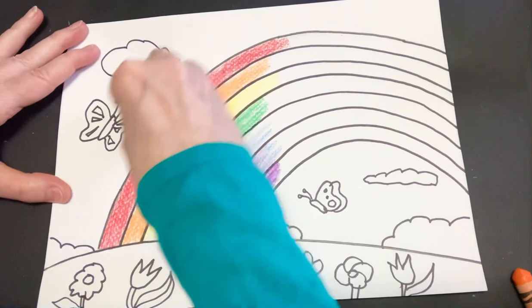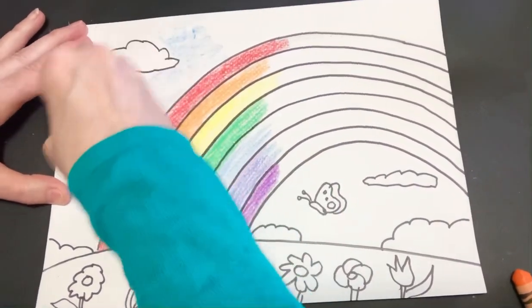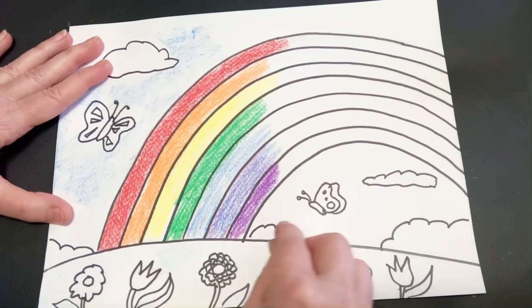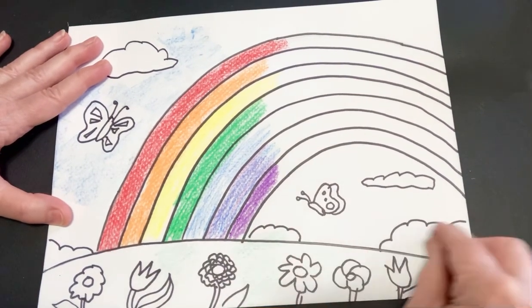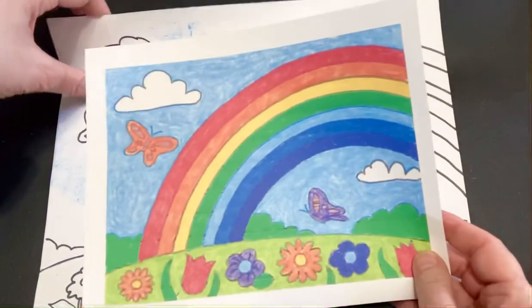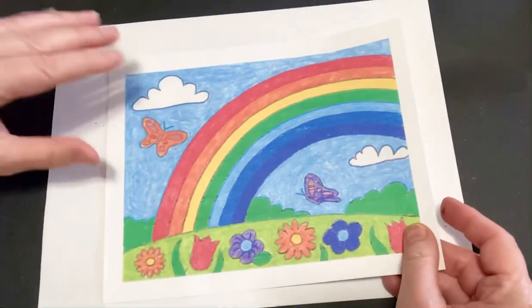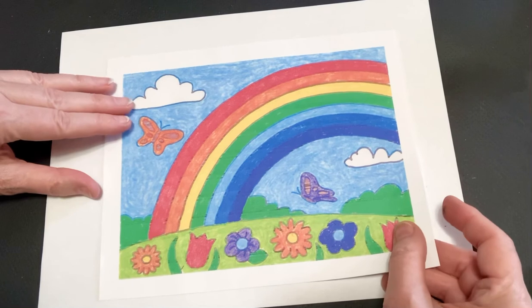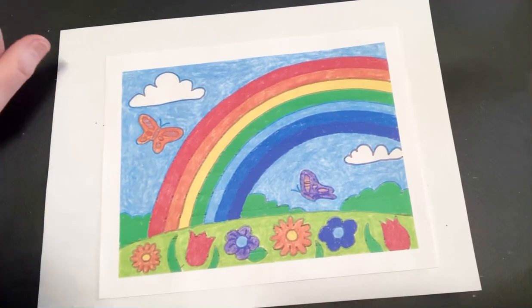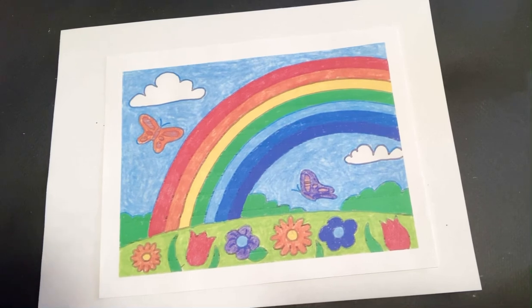And from here, you can add your color of your sky and your grass and bushes and your flowers. And then when you're all done, you're going to have a beautiful picture. So have fun making your own rainbow. Have a great time. Bye-bye.